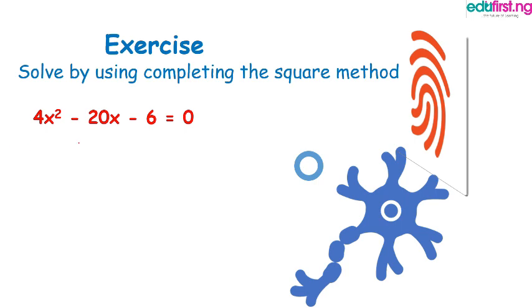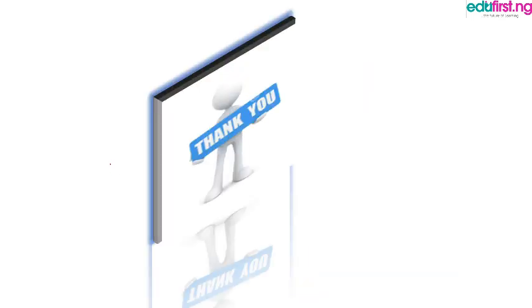4x² - 20x - 6 = 0. Solve it by using completing the square method to see if you really understand what we are learning. Thank you very much and bye.